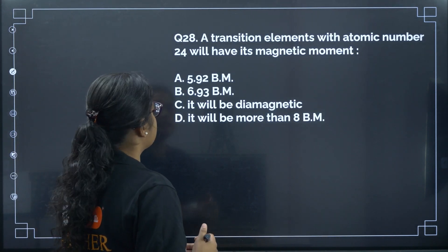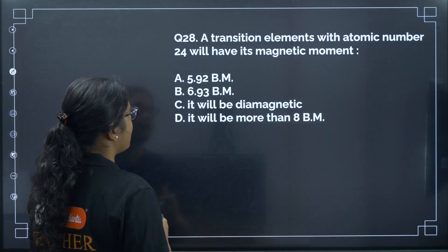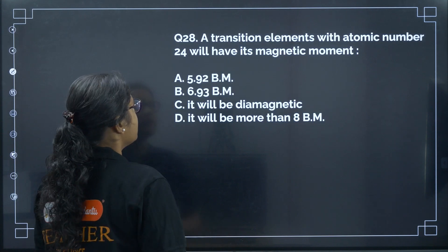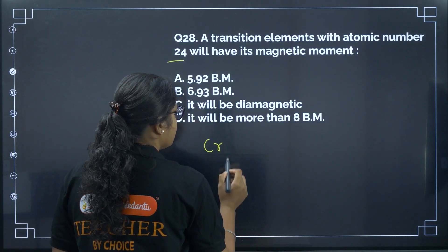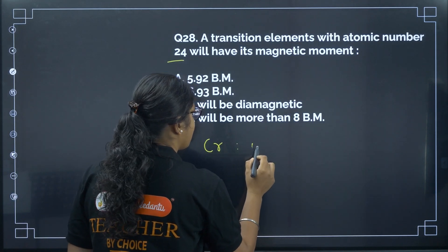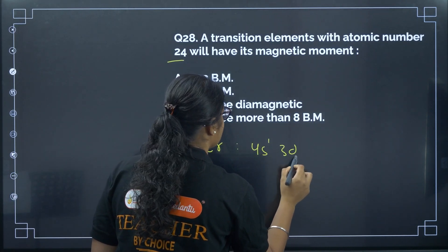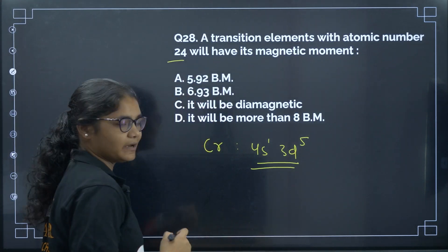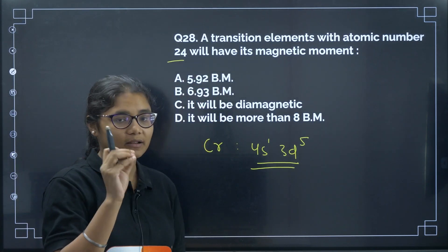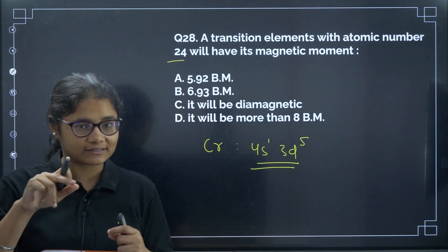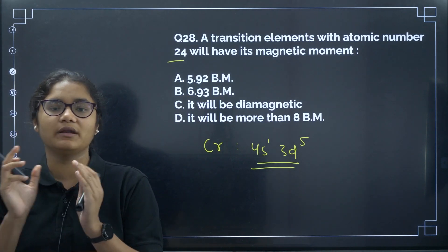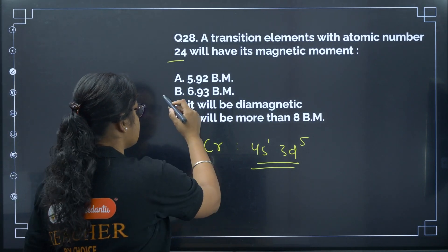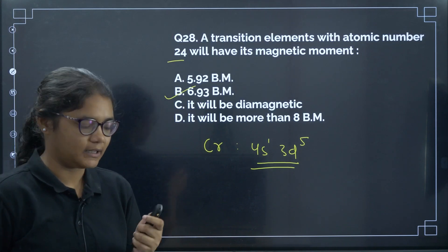Question 28: A transition element with atomic number 24 — that is chromium — has its magnetic moment as? Chromium's electronic configuration is 4s¹3d⁵, so it has 6 unpaired electrons. If the number of unpaired electrons is 6, the magnetic moment will start with 6-point-something. The correct answer is option B.